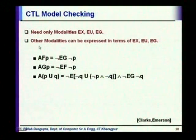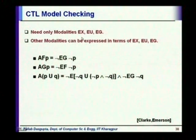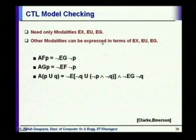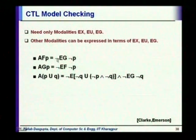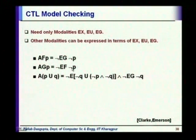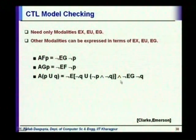The basic modalities required in CTL are EX, EU, and EG, and all others can be expressed in terms of these. For example, AFp can be expressed as ¬EG¬p, AGp can be expressed as ¬EF¬p, and A(p Until q) can be expressed as a combination: ¬EG¬q and ¬E(¬q Until (¬p ∧ ¬q)).